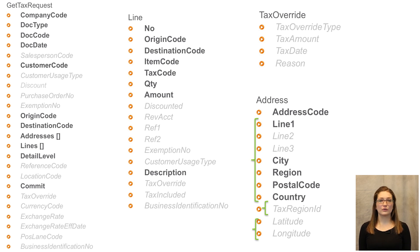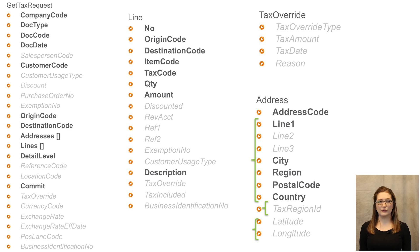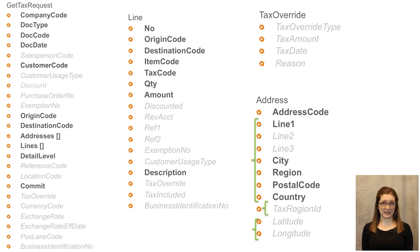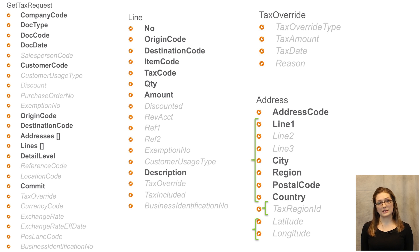Origin code corresponds to the origin address, and destination code indicates your destination address — you'll have an array of addresses. An array of lines represents your charges, shipping, etc. The detail level controls how much information about the tax calculation you want to get back. And whether or not you want us to set the document, if it's saved, to be committed and reportable.